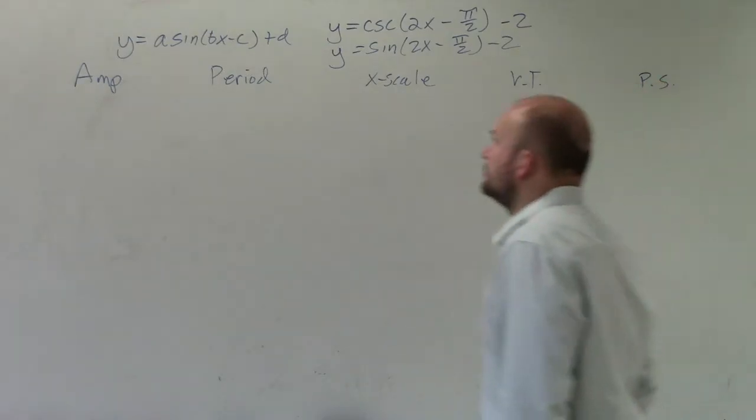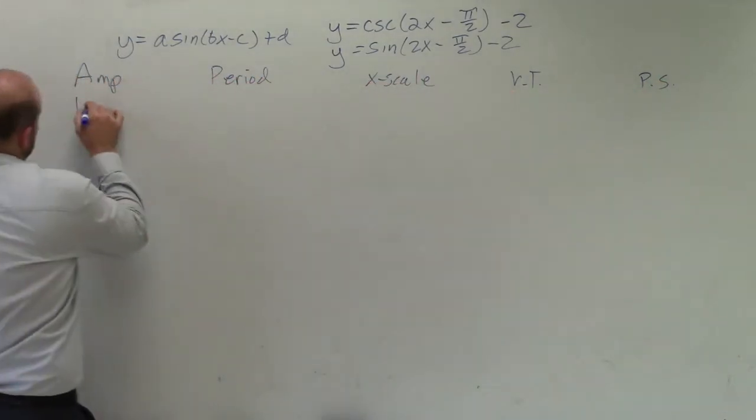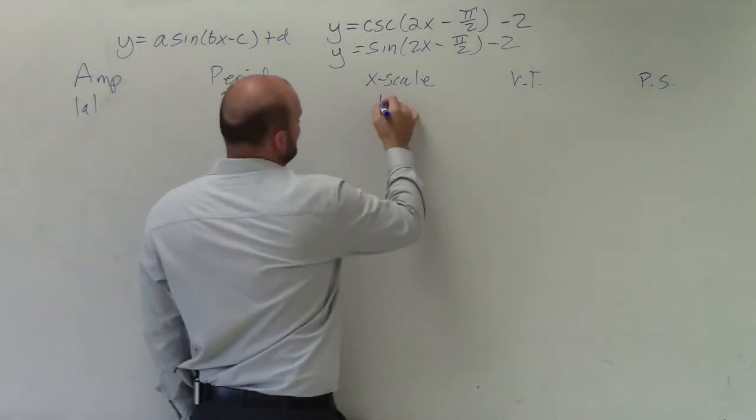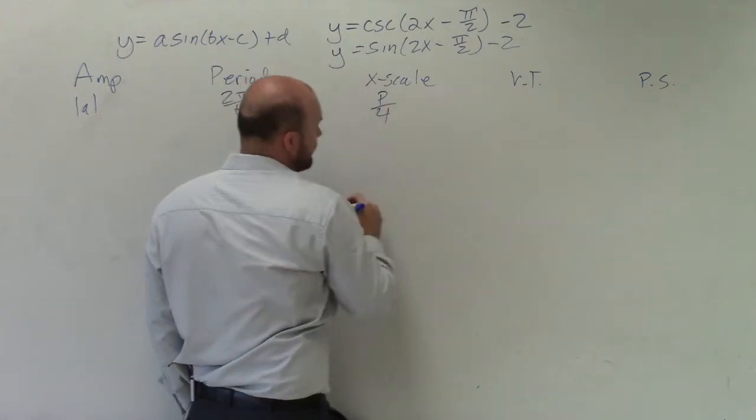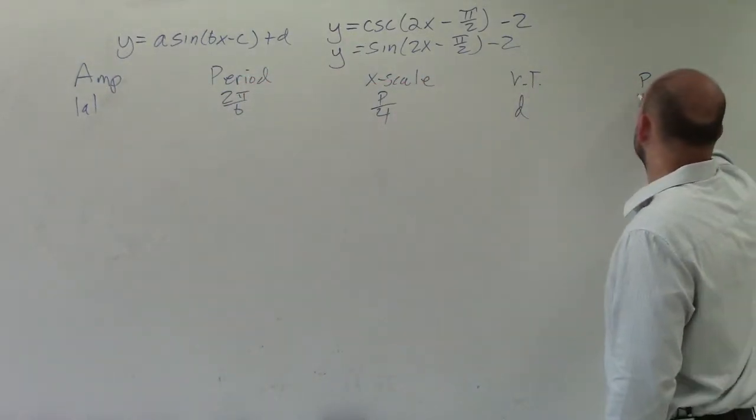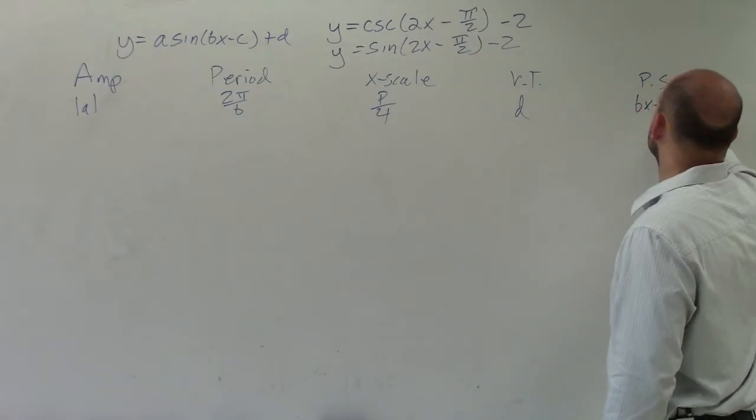To determine our amplitude, amplitude is simply just the absolute value of a. The period is 2 pi divided by b. X scale is just your period divided by 4. Vertical translation is just your value d. And phase shift is what's in the parentheses set equal to 0.